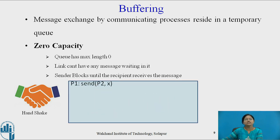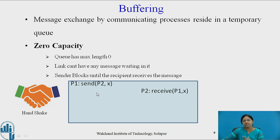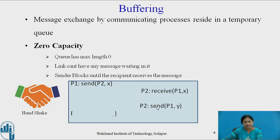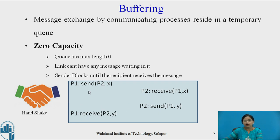In handshaking, when process P1 sends a message to P2, P1 blocks until P2 receives the message. Once P2 receives the message, P2 sends a message back to P1 and waits until P1 receives it. Both sender and receiver are blocking in this scenario. This type of one-to-one communication operation is used in handshaking.